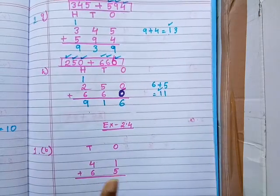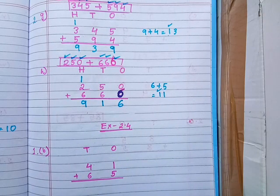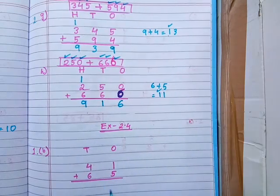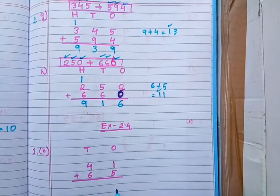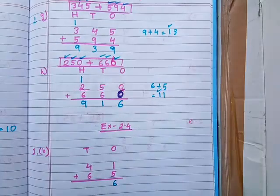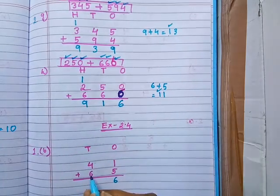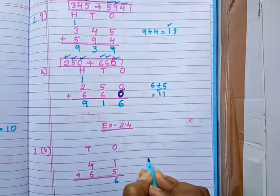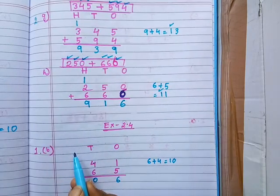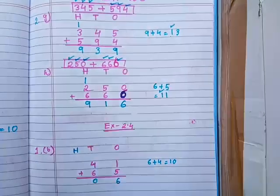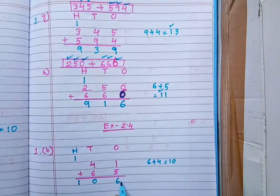Next we will start exercise 2.4. Two numbers are given: 41 and 65. When we add these two-digit numbers we can see that we are getting a three-digit number. Our process: first add the 1's place digits — 5 plus 1 equals 6. Then add the 10's place digits — 6 plus 4 equals 10. Write down 0 in 10's place and 1 in 100's place. So 106 is our answer.